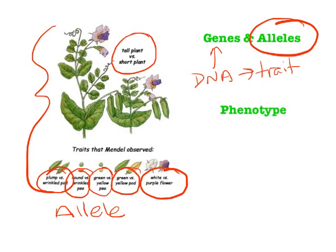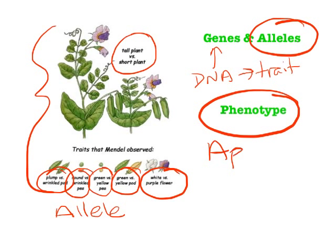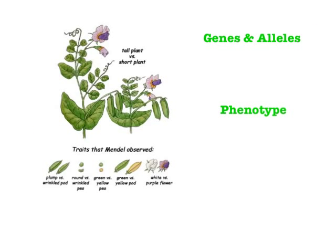Each of these things combine into this term called phenotype. Phenotype is a very complex-sounding word for what something looks like — it's simply the genetic way of saying what something's appearance is. The tall pea plant up here has a phenotype of being tall, and the one next to it has a phenotype of short. The peas down at the bottom have phenotypes too — one has a phenotype of being plump and the other of being wrinkled. It is possible to have alleles that you may not see. Phenotype is what you look like on the outside.